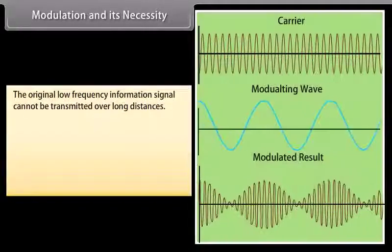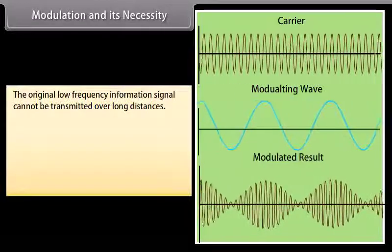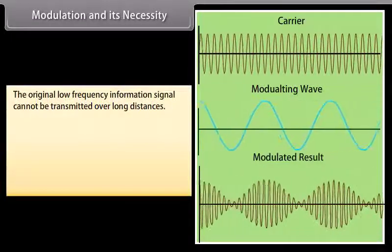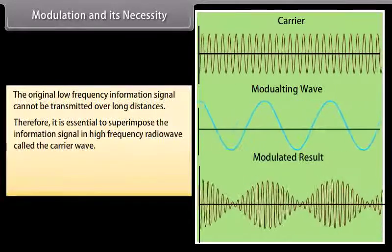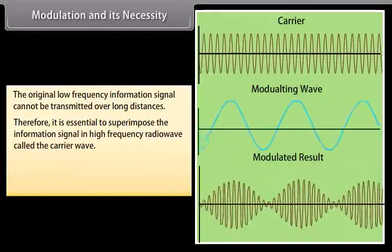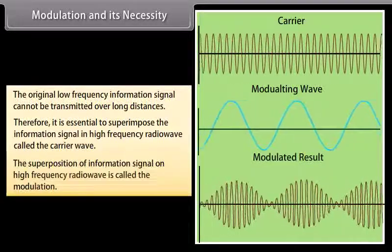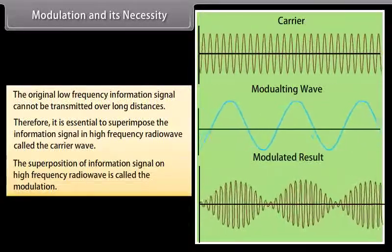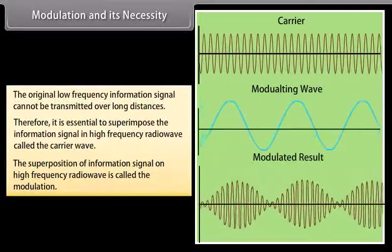Modulation and its necessity: the original low-frequency information signal cannot be transmitted over long distances. Therefore, it is essential to superimpose the information signal on a high-frequency radio wave called the carrier wave. The superposition of an information signal on a high-frequency radio wave is called modulation.